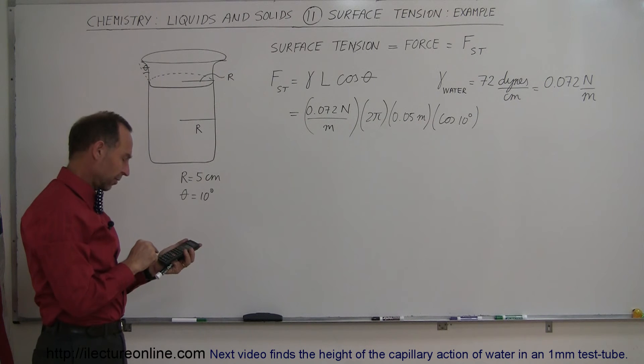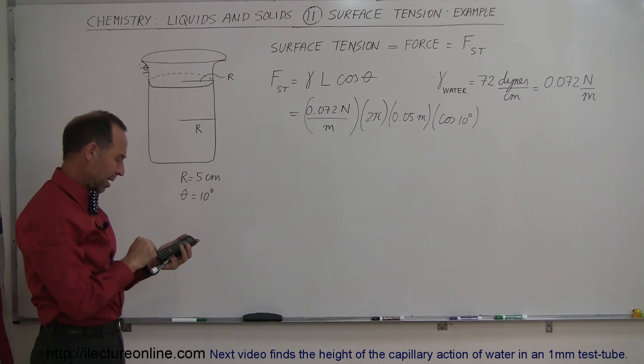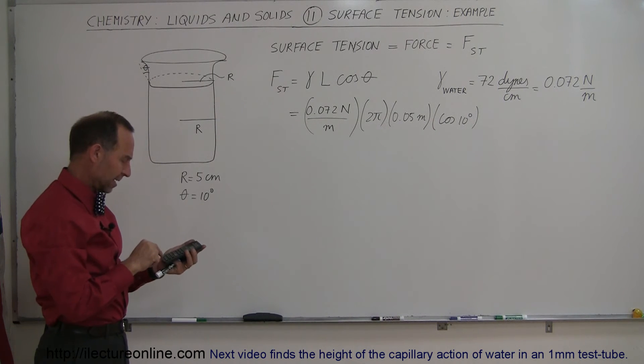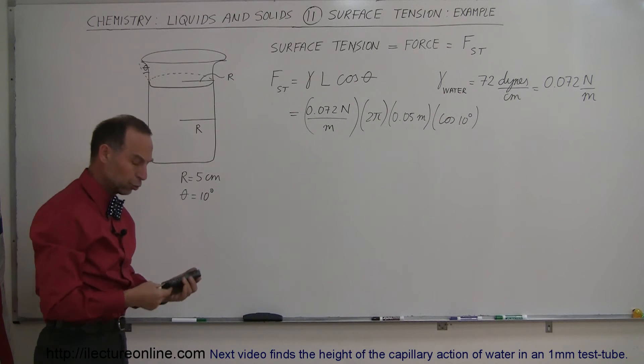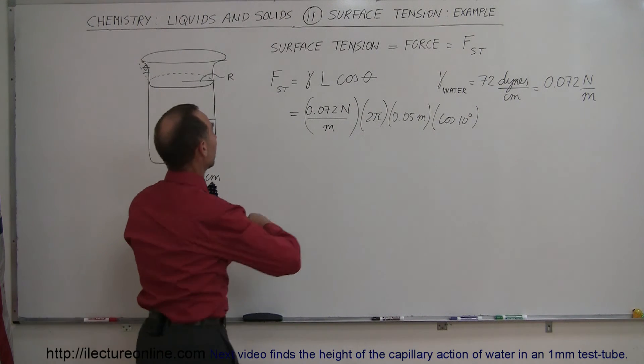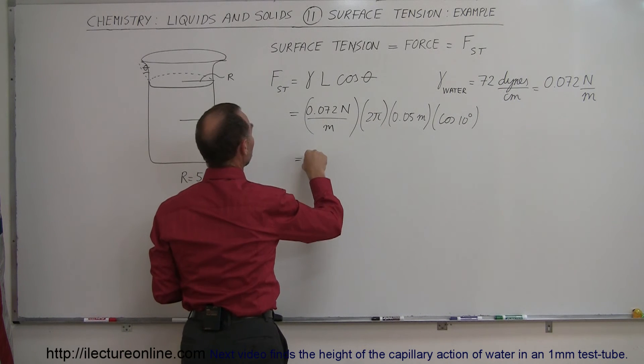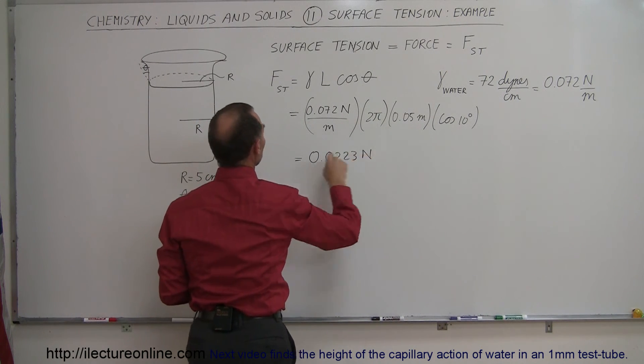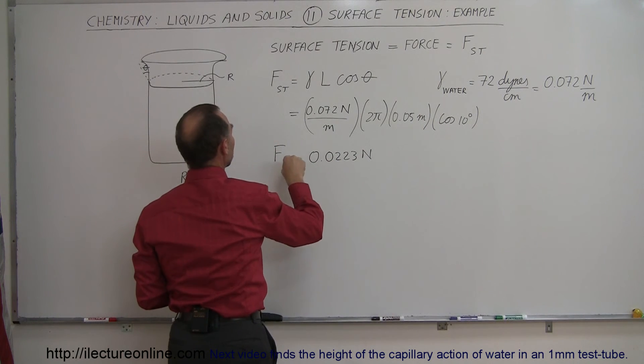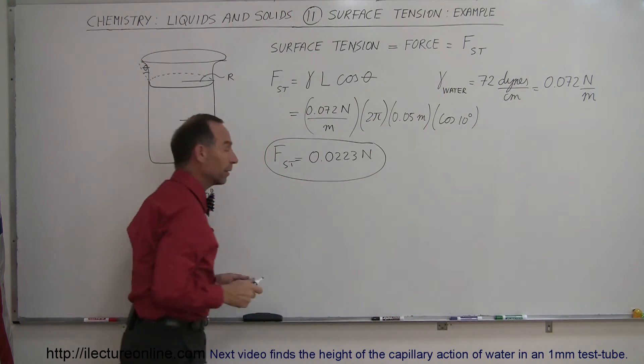So we get 0.072 times 2 times π times 0.05 times the cosine of 10 equals, and we get 0.0223 newtons. So the surface tension would be 0.0223 newtons along the edge of the beaker.